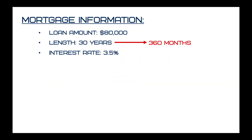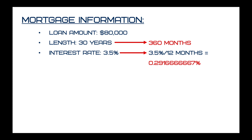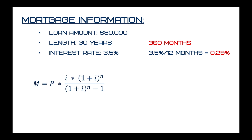We have to think in terms of months instead of years, so 30 years converts to 360 months. Similarly, the interest rate of 3.5% is per year, so to convert it to months you divide by 12, giving you a monthly interest rate of 0.29%. The exact value is 0.2916666667 and it goes on, but for the simple calculations we're doing here, we just say it's 0.29%.